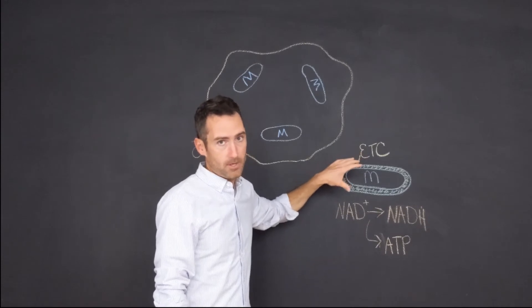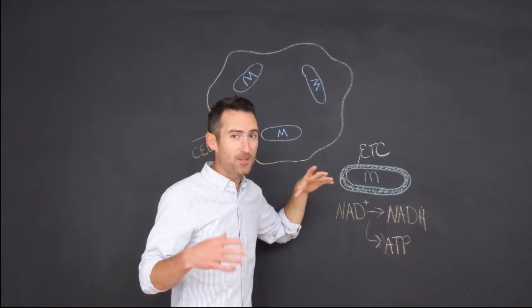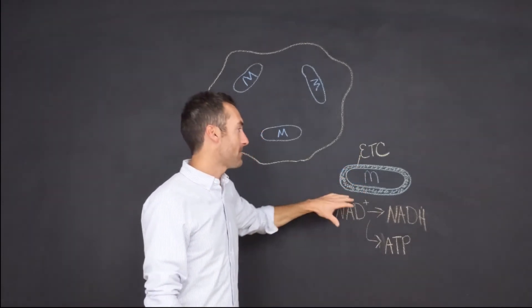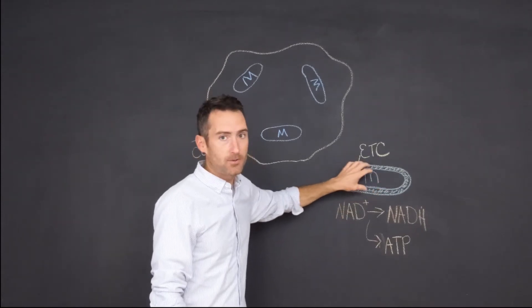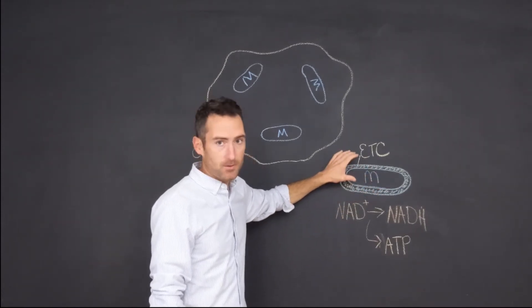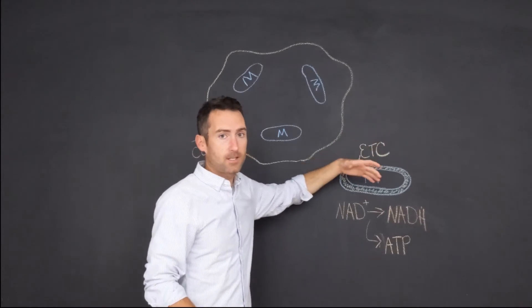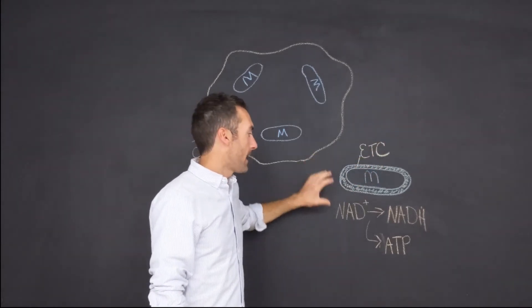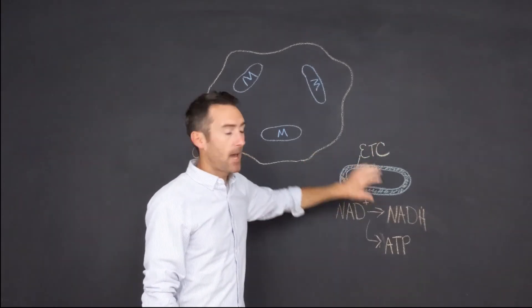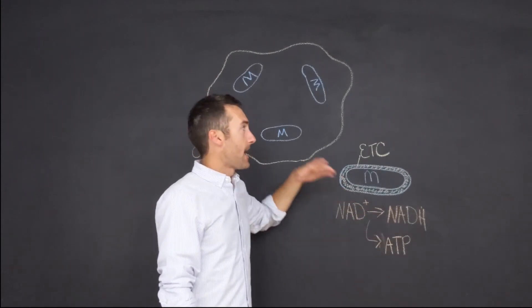through aerobic respiration. I know there's a lot of big terms here, but just imagine that inside this mitochondria there's two layers, and in between those two layers is this process that's taking NAD and making ATP. And as we